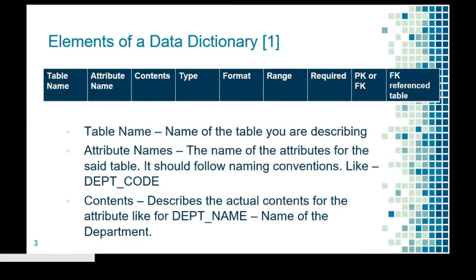For the elements of the data dictionary, from our source, it has a table name, the attribute name, the contents, the type, the format, the range, whether it is required, primary key or foreign key, and the foreign key reference table. These are the elements of the data dictionary and we are going to discuss them one by one.